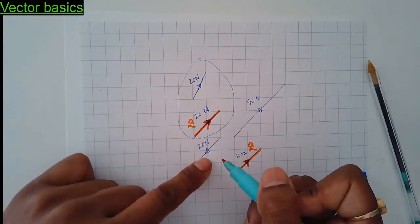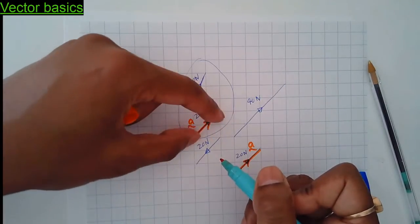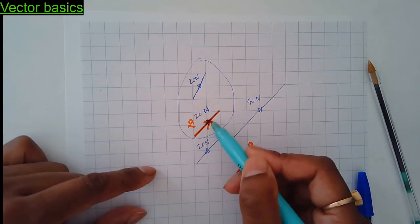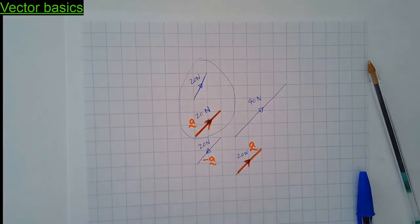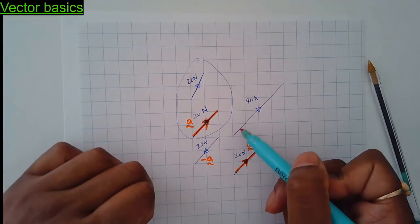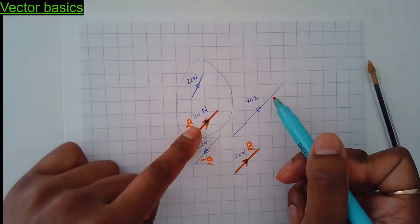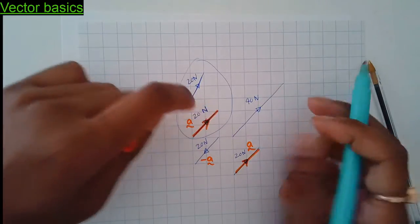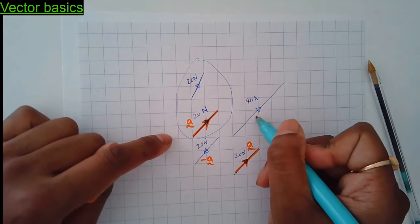That vector is the same size as 'a' but going in the exact opposite direction, so I'd call it minus a. And that vector — it looks the same direction as 'a' but it's double the size, so you'd call it 2a.